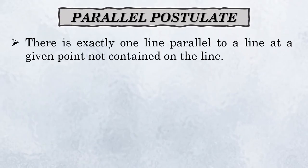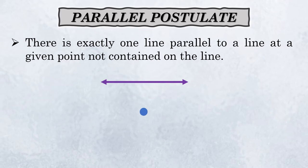We have one postulate for parallel lines: there is exactly one line parallel to a given line at a given point not contained on the line. For example, if we have a line and then a separate point, and that point forms another line, then that line is what we call a parallel line.